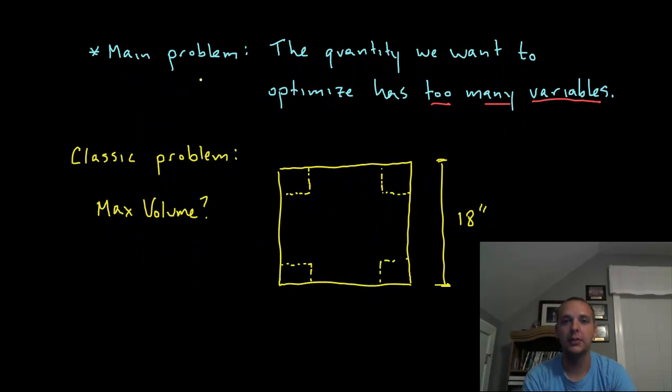The problem for these optimization problems is the quantity we want to optimize is going to have too many variables. I am going to illustrate this point with a classic example. This example is in most calculus textbooks.